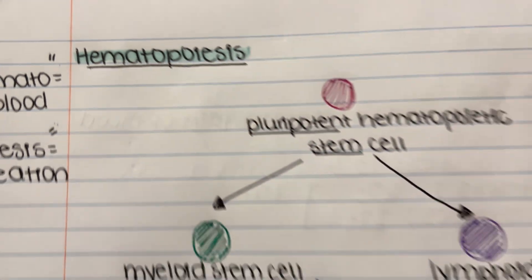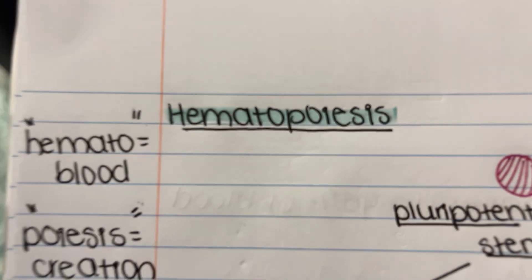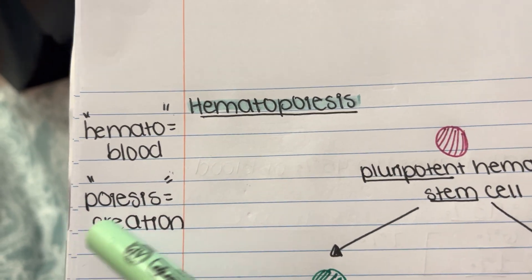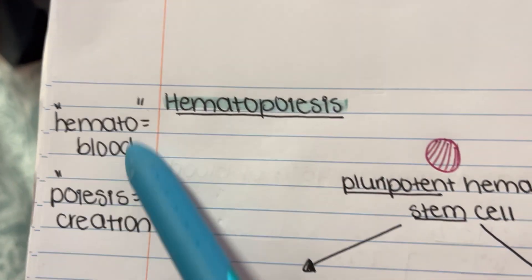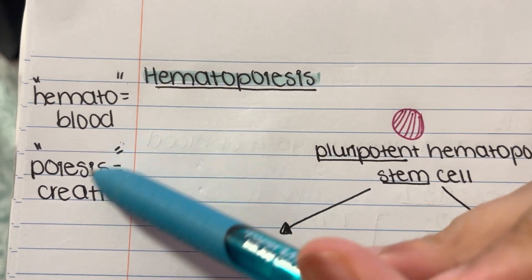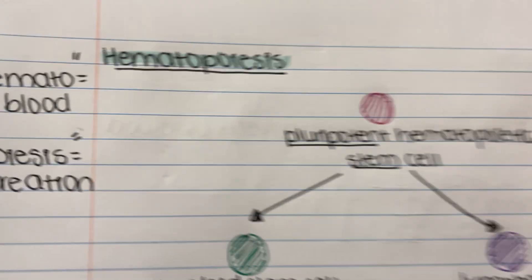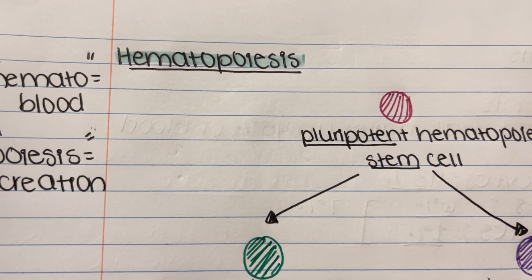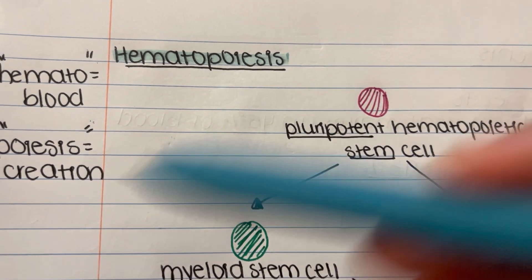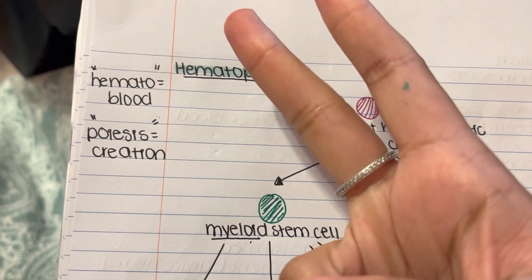Welcome back to another video. Today we are going to learn about hematopoiesis. 'Hemato' means blood and 'poiesis' means creation, so hematopoiesis basically means the creation of blood. We already know what erythropoiesis is, or leukopoiesis, but hemato means blood in general — not just erythrocytes, but leukocytes, platelets, and many other things.